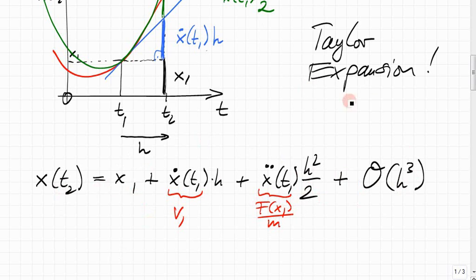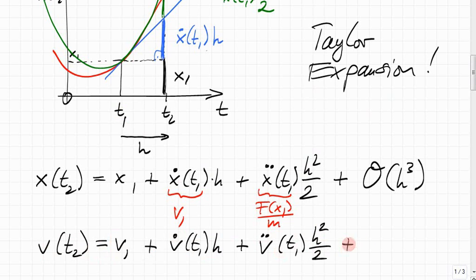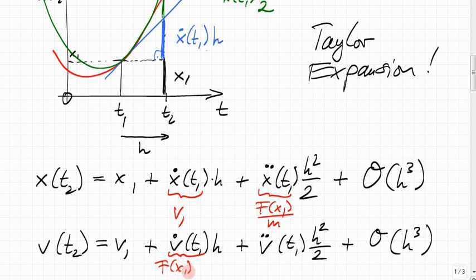We can do the same type of Taylor expansion for the velocity. The exact value of the velocity should be the value before the step, plus the derivative of the velocity at the start times the step size, plus the second derivative of the velocity at the start times h²/2, plus again something of order h³. The first derivative of the velocity with respect to time is the acceleration — force over mass — so that term is f(x1)/m.